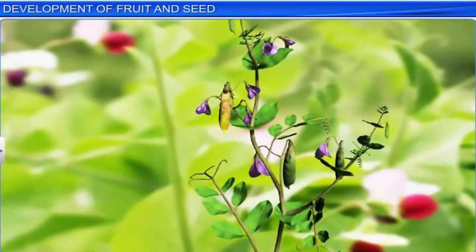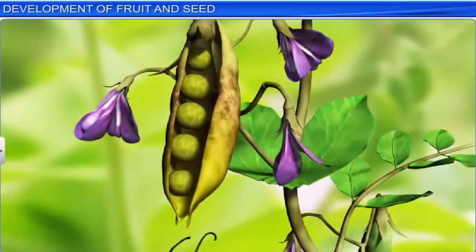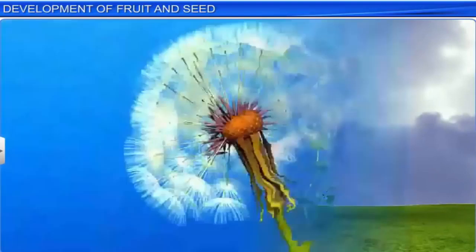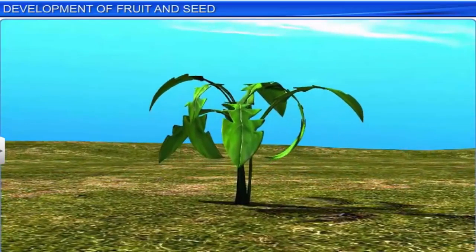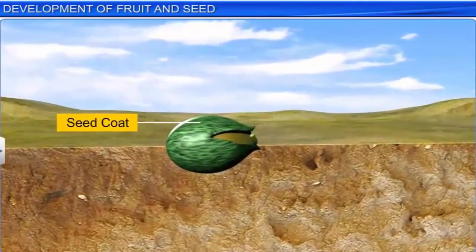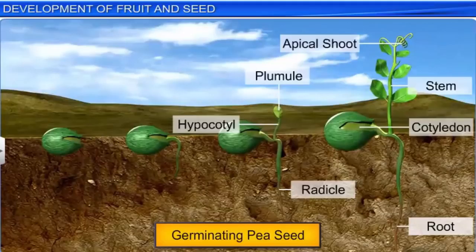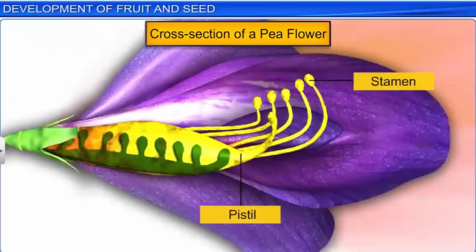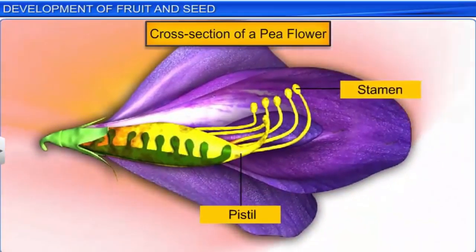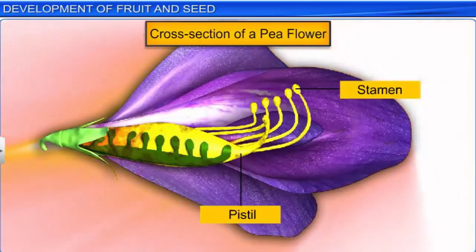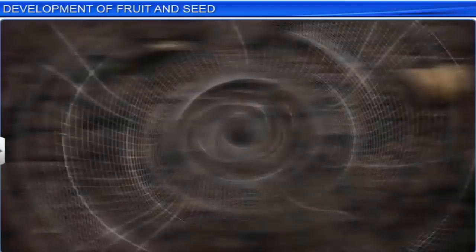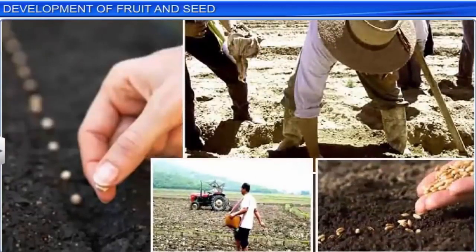Seeds — a character unique to angiosperms — also offer many advantages to these groups of plants. Seeds have special mechanisms such as bursting or wings that help them disperse to new habitats, thereby allowing plants to claim new areas to propagate. In addition, the seed's tough outer coat protects the embryo from hostile environmental conditions. Upon germination, seeds also have a better survival rate as they are guaranteed nourishment by the cotyledons. As seeds are products of sexual reproduction, they help bring about genetic variations within plant species. Genetic variations are the key to evolution and also help plant species adapt and survive in different environments. Seeds, which help in the propagation of angiosperms, also form the crux of agriculture.